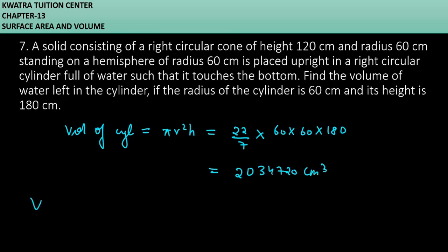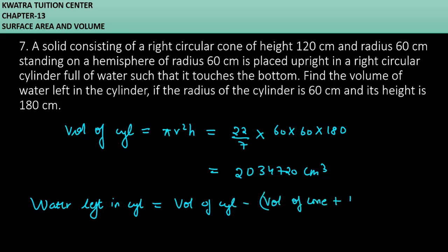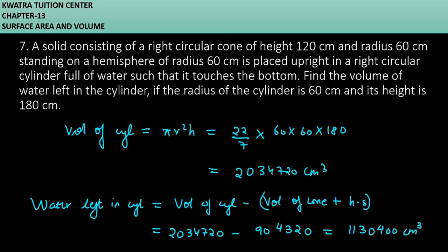Now, the volume of water left in the cylinder equals the volume of the cylinder minus the volume of the cone plus hemisphere. That is 2,034,720 minus 904,320, which gives us 1,130,400 cm³. This is how you solve question number 7.